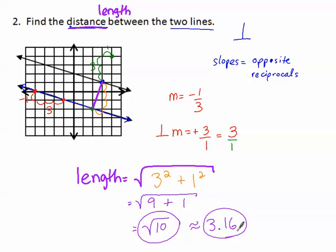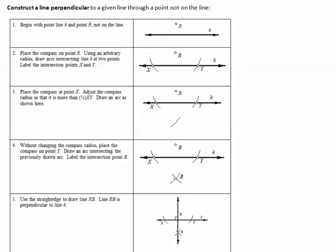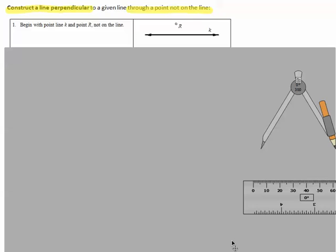Let's review constructing a line perpendicular to a given line through a point not on the line — we did this in the previous unit, but now that we're dealing with perpendiculars, it's a good review. I have my compass and my straightedge. We begin with line K and point R, where point R is not on the line.